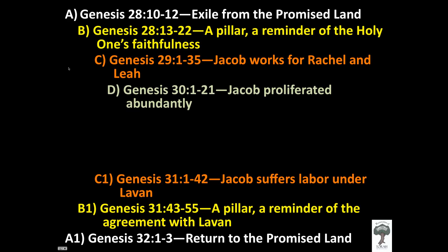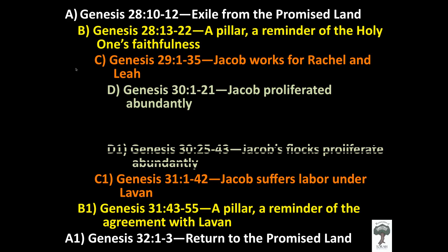That takes us to Genesis chapter 30, verses 1 through 21 — the story of how Jacob proliferated abundantly. When he first arrived in Paddan-Aram there was just him, and then a few verses later he has an abundance of children. This is thematically connected to Genesis chapter 30, verses 25 through 43, which describes how Jacob's flocks also proliferated abundantly. The common theme there is reproduction.